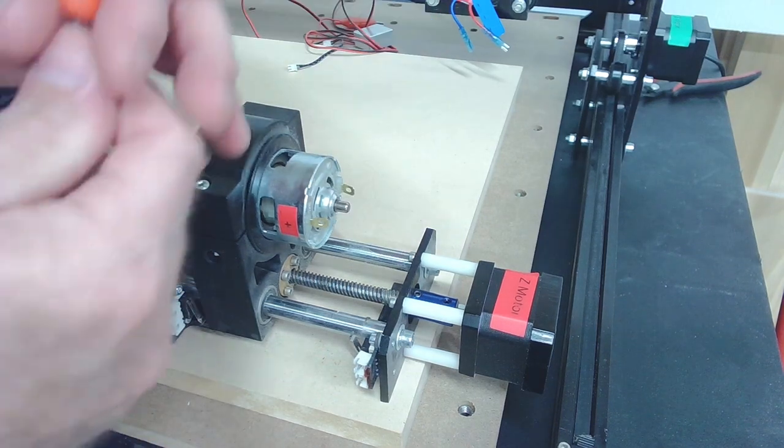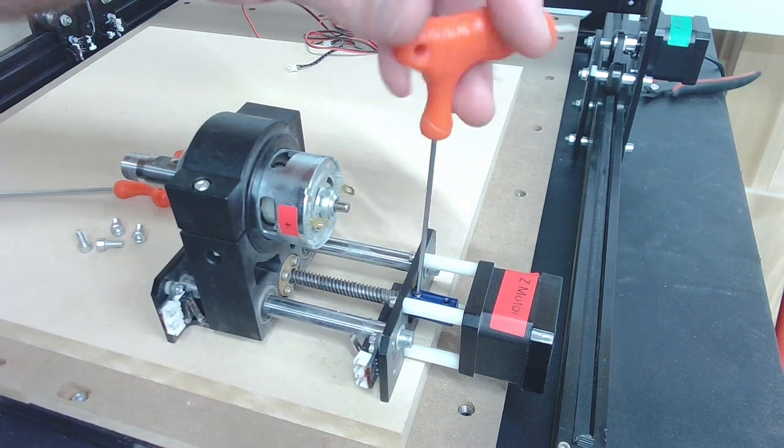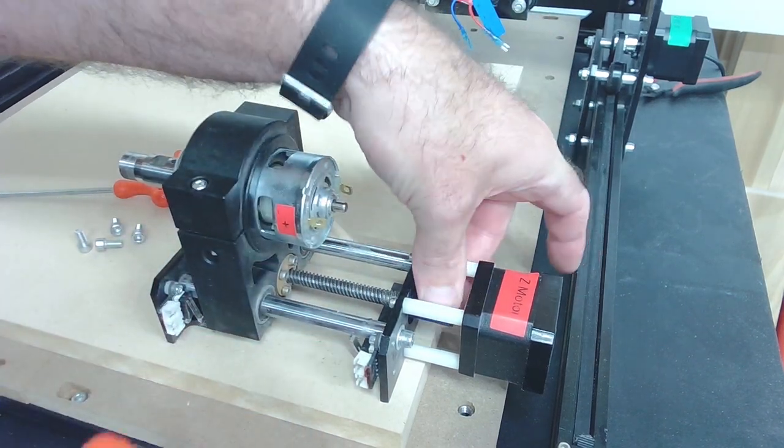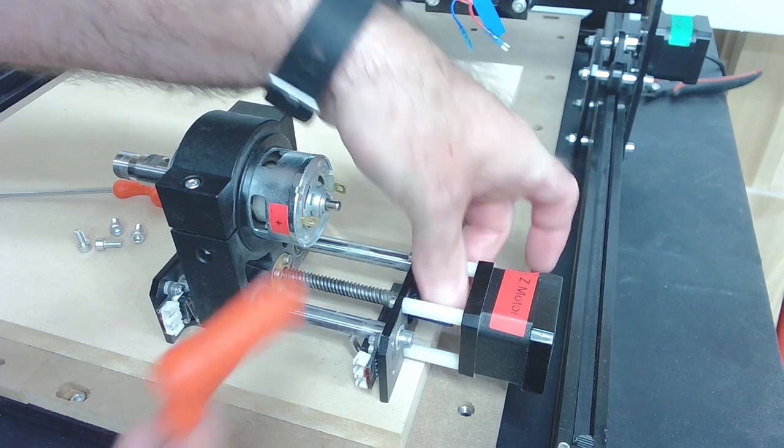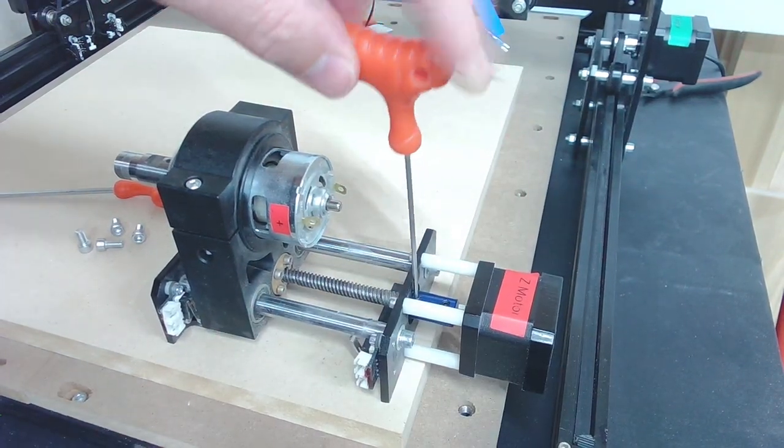With that repositioned a little better for the camera angle here, you can see these are the set screws I'm referring to. I'm just going to loosen that one, rotate this around, and then get in here and loosen this one.